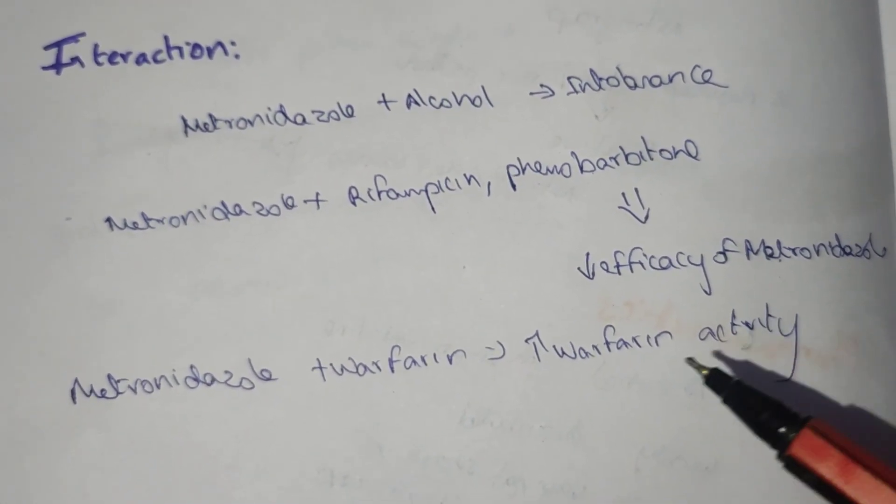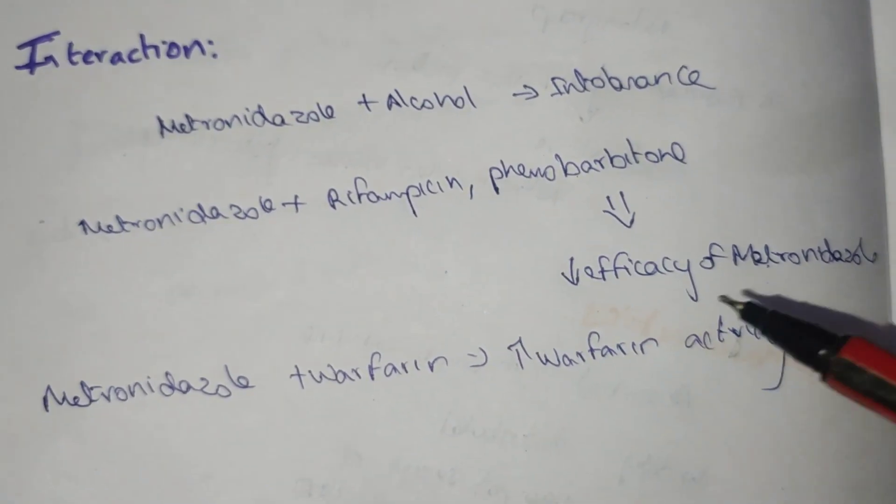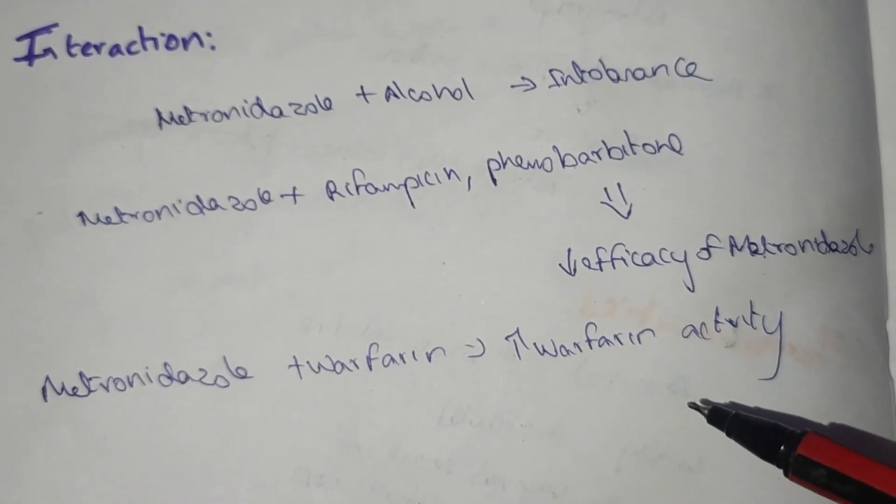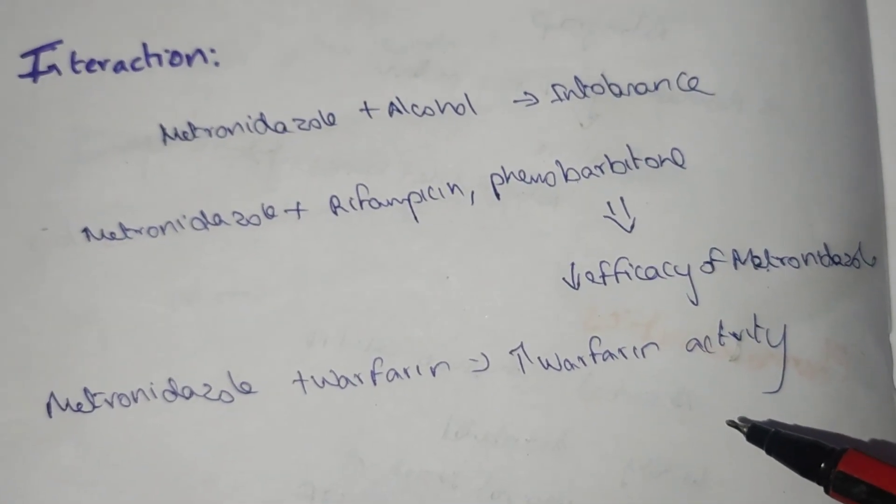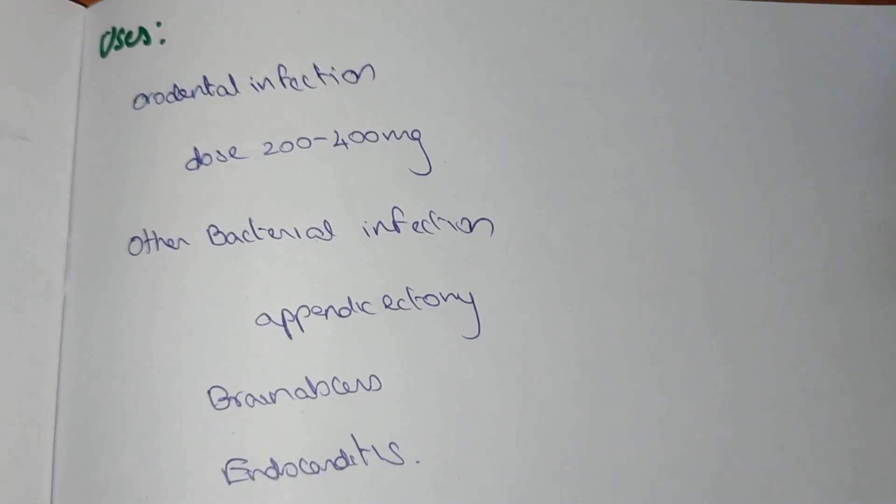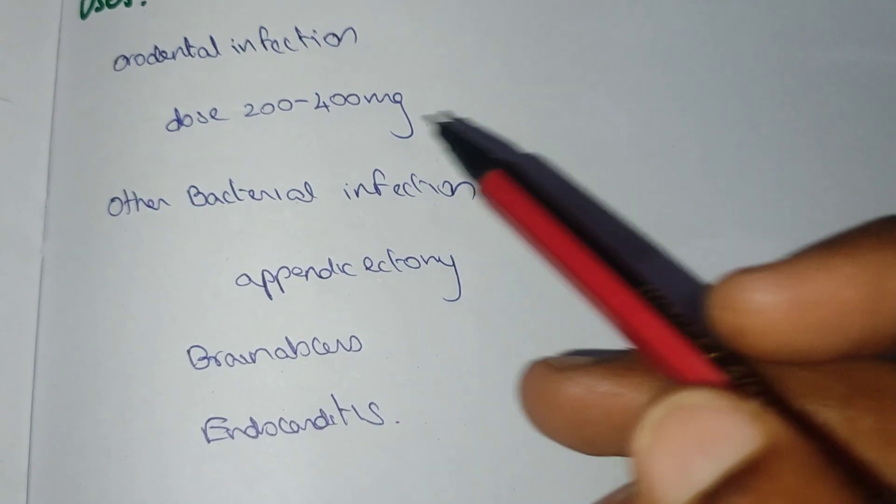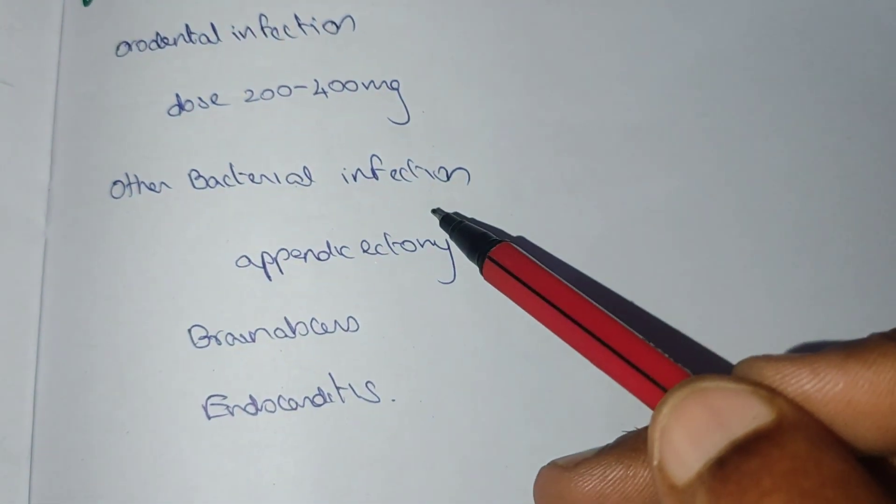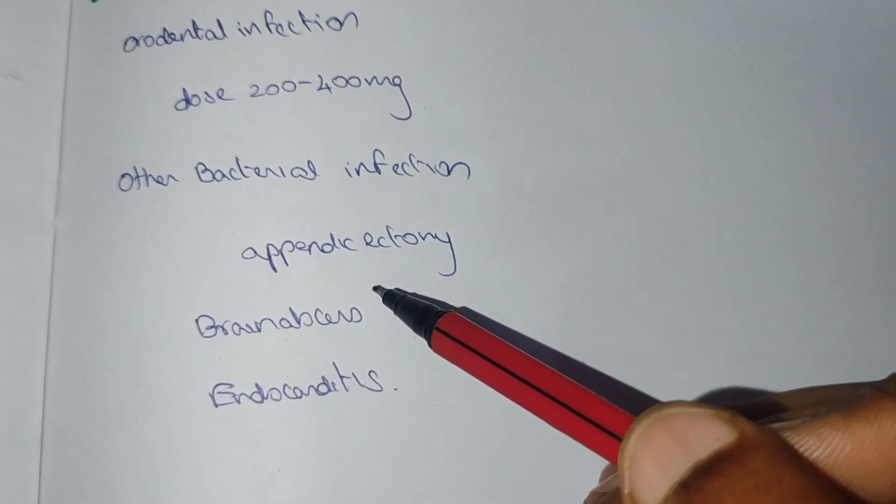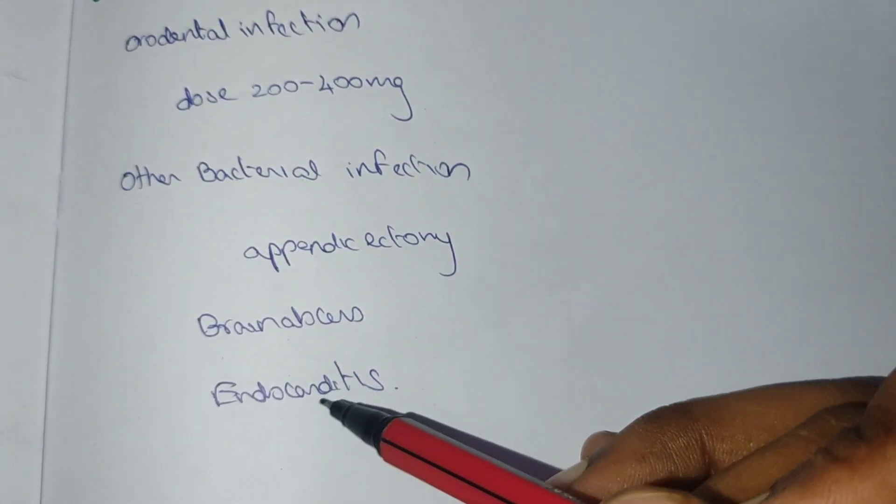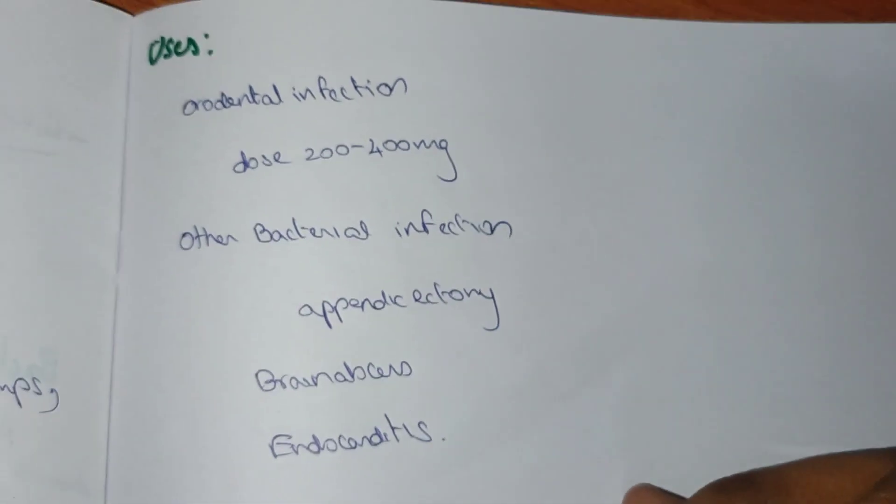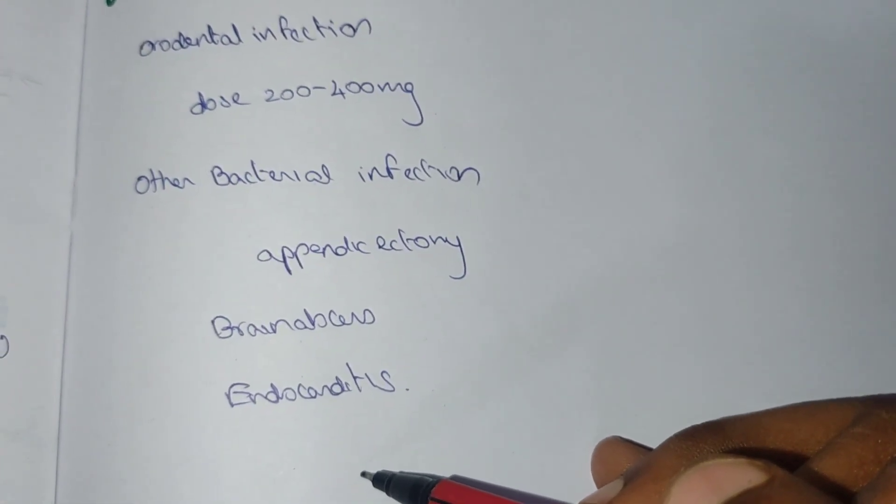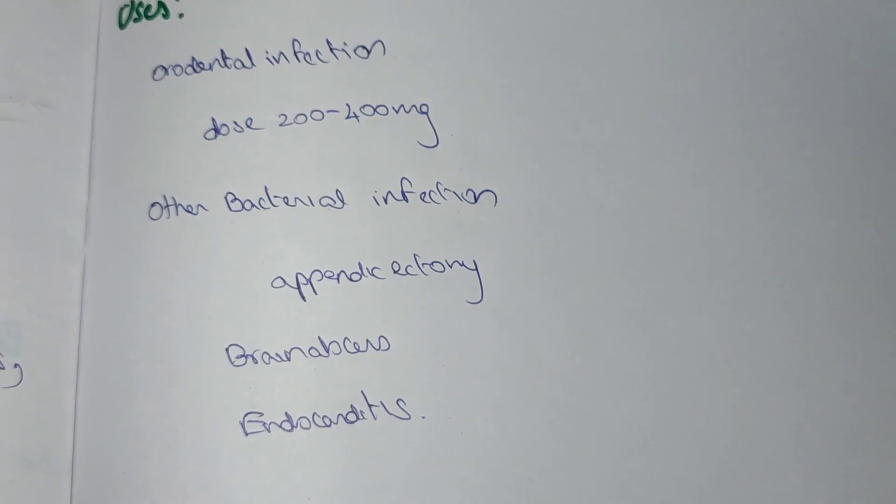Uses: It is used in orodental infection at a dose of 200 to 400 mg. Other bacterial infections include appendicectomy, removal of appendix, brain abscess, and endocarditis. These are the uses of metronidazole.